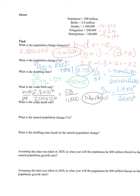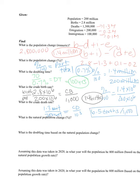I encourage you to pause the video and try the crude death rate on your own. For the crude death rate, I take deaths of 1.3 million over 200 million — the millions cancel — equals the crude death rate out of 1,000. Cross multiplying and solving, I get 6.5 deaths per thousand. That is the crude death rate.